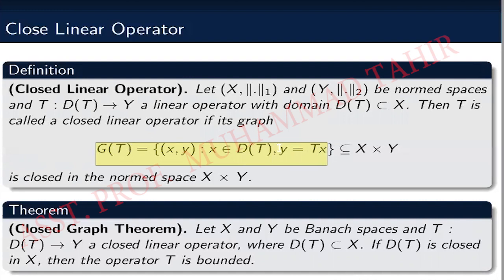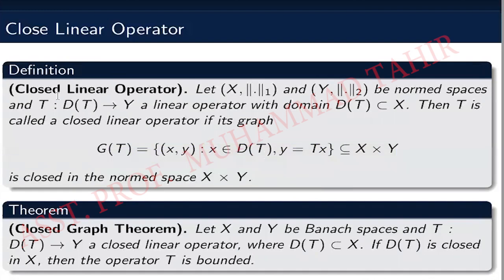The graph of operator T is the set of ordered pairs (x, Tx) where x is an element of the domain of T, and this graph is a subset of X cross Y. In calculus, when you have a graph in R cross R, it is a curve or line — similarly, the graph of an operator is some part of X cross Y.